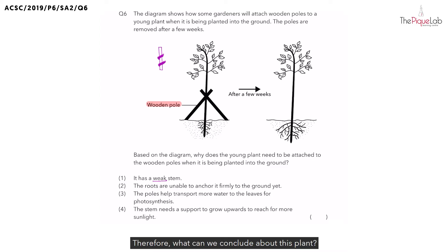Therefore, what can we conclude about this plant? Does this plant have a weak or a strong stem? Yes, we can tell that this plant has a strong stem. So, immediately we can cross out option one.